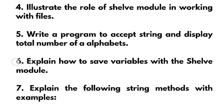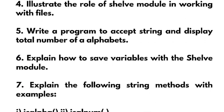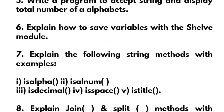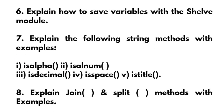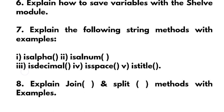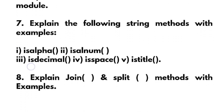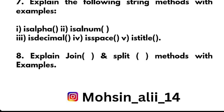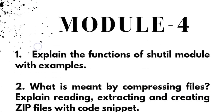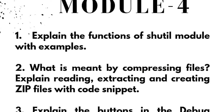Write a program to accept a string and display the total number of alphabets. Explain how to save variables with the shelve module. Explain the following string methods with example: isalpha, isalnum, isdecimal, isspace, istitle. Explain join and split methods with examples. This covers Module 3.